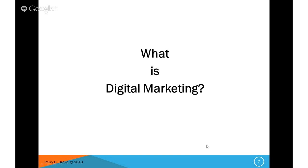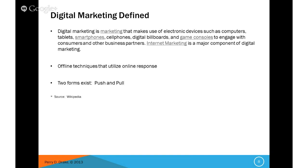Digital marketing is a subset of integrated marketing. Digital marketing makes use of electronic devices such as computers, tablets, smartphones, cell phones, digital billboards, and game consoles to engage consumers and other business partners. It is a major component of digital marketing. Internet marketing also includes offline techniques that utilize online response — for example, a direct mail piece that pushes you to a website.